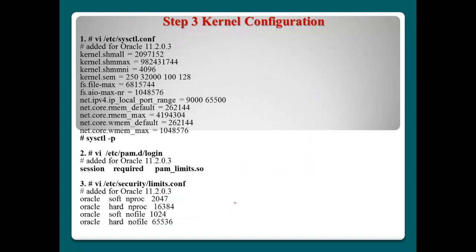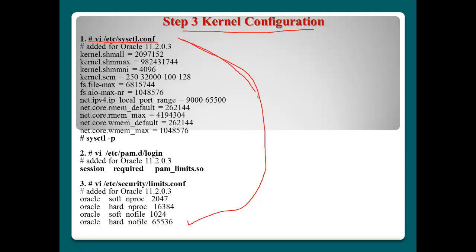Step 3, kernel configuration. Normally the Oracle database needs a lot of configuration. First, it's the kernel — the kernel must support Oracle installation. In /etc/sysctl.conf, you have to configure settings especially related to the process, port number, and memory size. After you configure this, you have to use the command sysctl -p, which will read this file again.